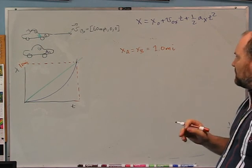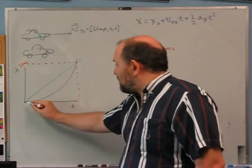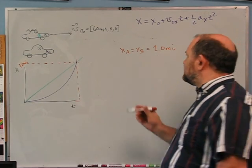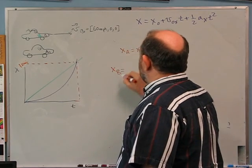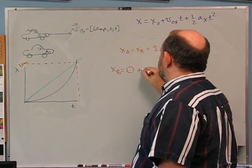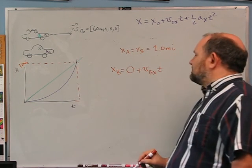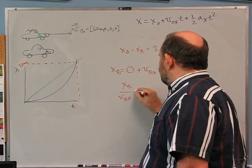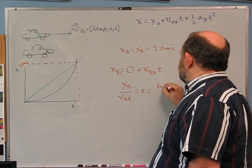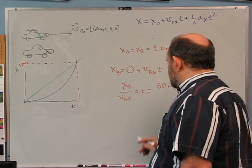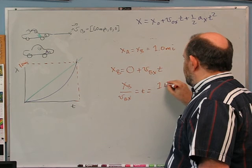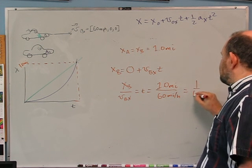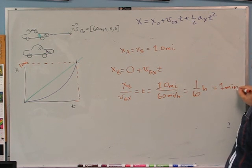I want xA = xB = 1.0 mile at the same time. First, find the time it takes car B to travel 1.0 mile: t = xB / vBx = 1.0 mile / 60 mph = 1/60 of an hour = 1 minute.